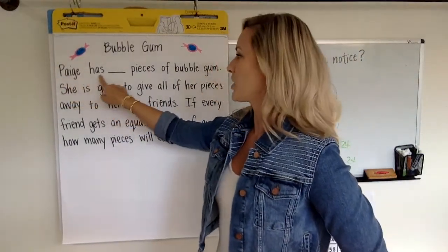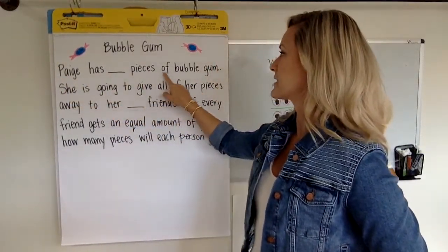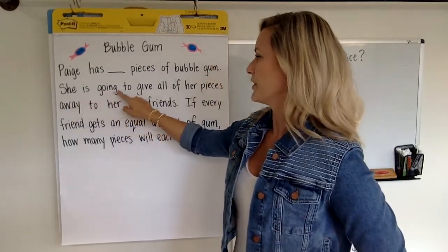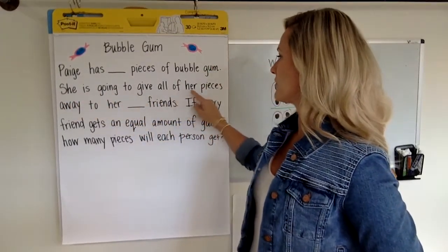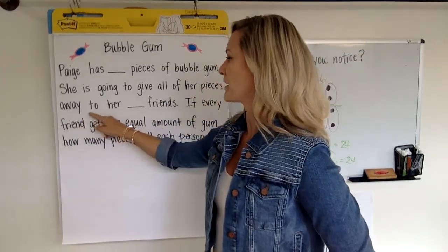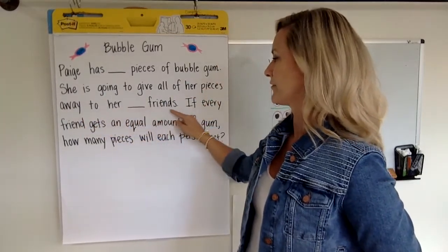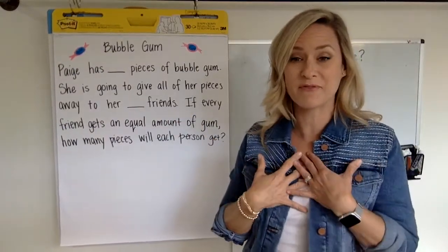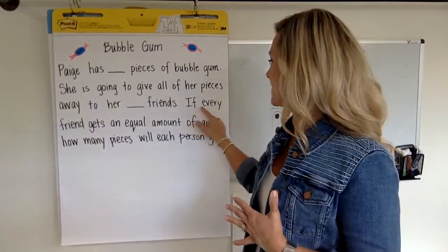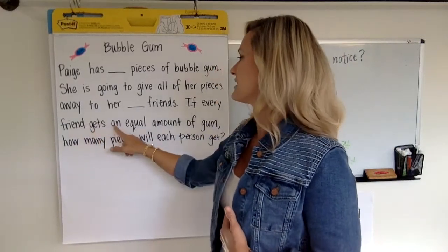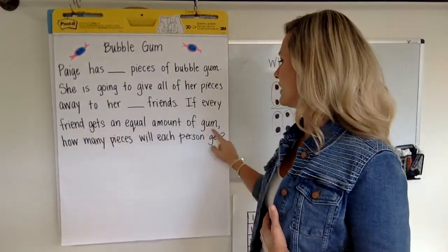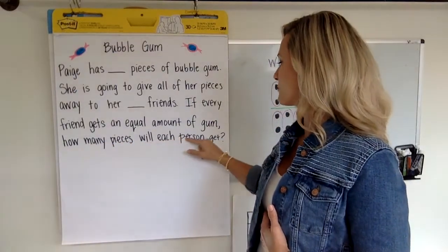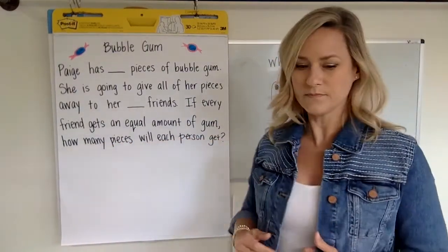Go. Paige has pieces of bubble gum. She is going to give all of her pieces away to her friends. Wow. She's going to give it all away. She's not even going to keep any for herself. If every friend gets an equal amount of gum, how many pieces will each person get?